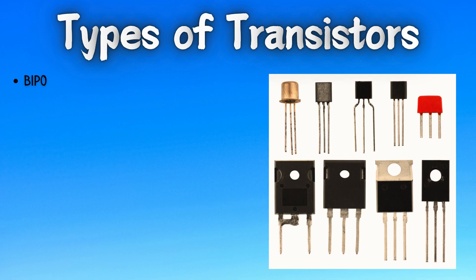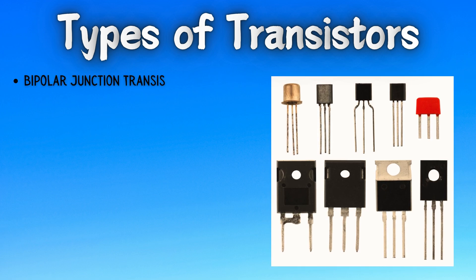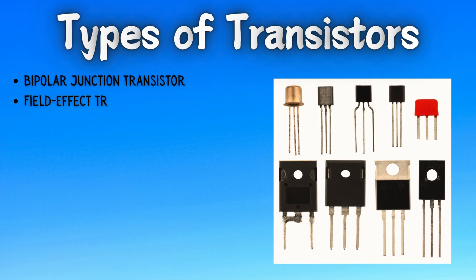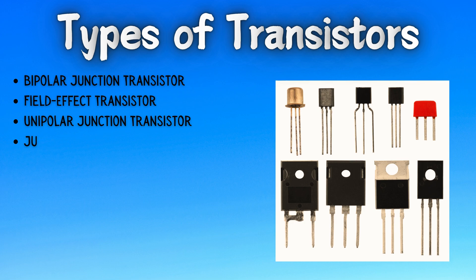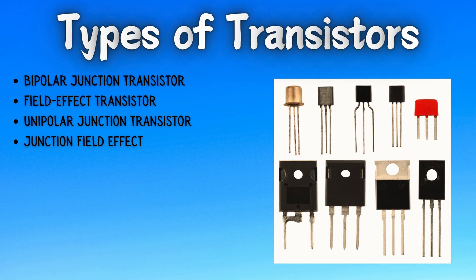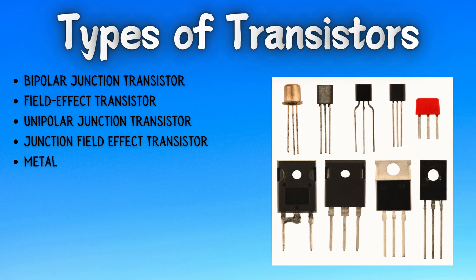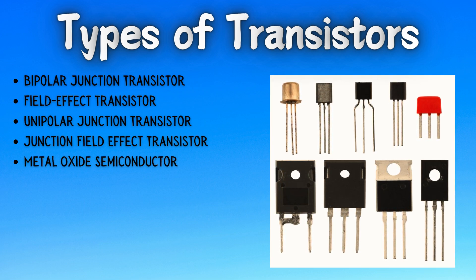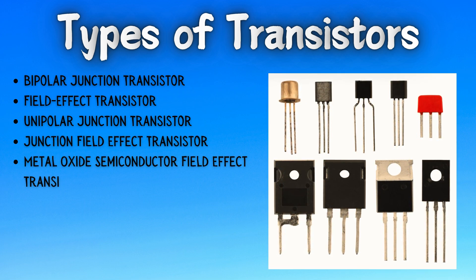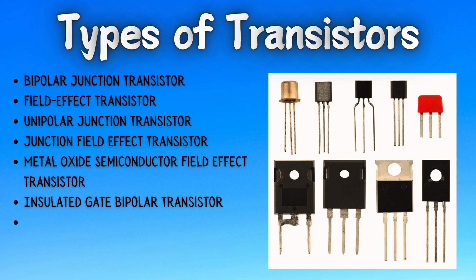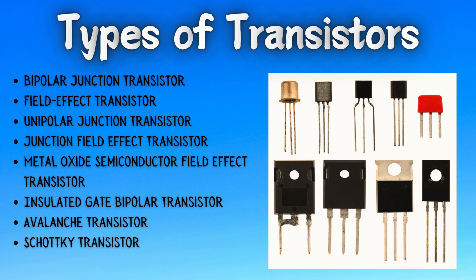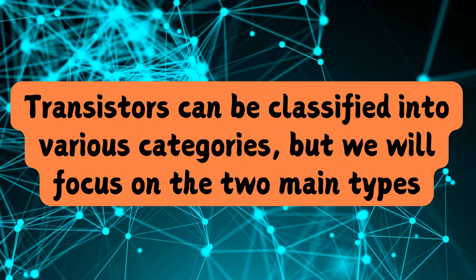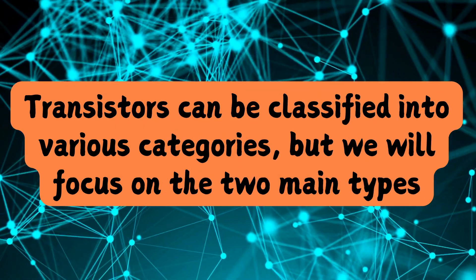Types of transistors include: Bipolar Junction Transistor, Field Effect Transistor, Unipolar Junction Transistor, Junction Field Effect Transistor, Metal Oxide Semiconductor Field Effect Transistor, Insulated Gate Bipolar Transistor, Avalanche Transistor, Schottky Transistor, and Diffusion Transistor. Transistors can be classified into various categories, but we will focus on the two main types.